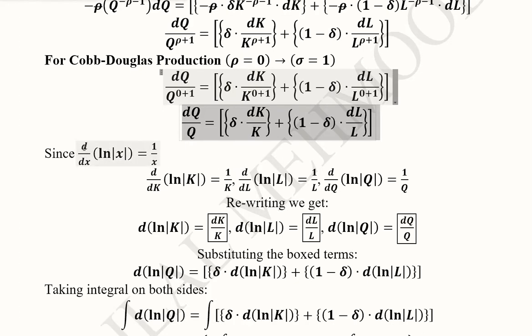We know that the derivative of a natural logarithmic function is 1 over x. So in case of capital, the derivative will be equal to this. And in case of labor, the derivative of natural log of labor will be equal to this. And in case of output, the derivative of the natural log of output will be equal to this.